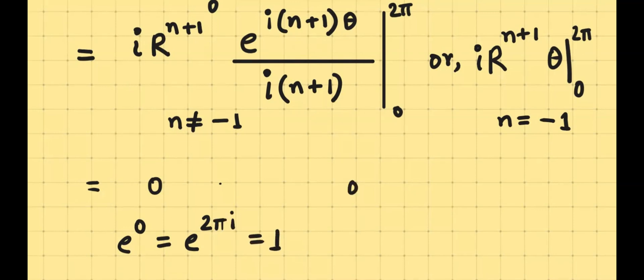On the other hand, we find when n is equal to negative 1, this is going to be i times R to the power n plus 1 times 2π. And, ladies and gentlemen, these are the results.